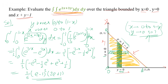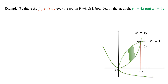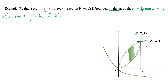One more example: evaluate the double integration of y dx dy over the region bounded by two parabolas y squared equal to 4x and x squared equal to 4y. First we plot both parabolas. The intersection points are found by solving simultaneously: y squared equal to 4x and x squared equal to 4y. Substituting, we get x equal to 0 and x equal to 4.